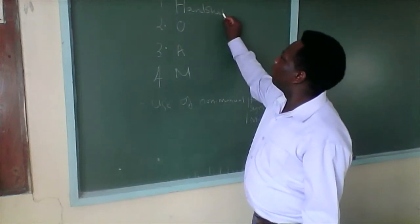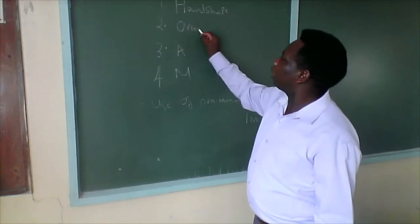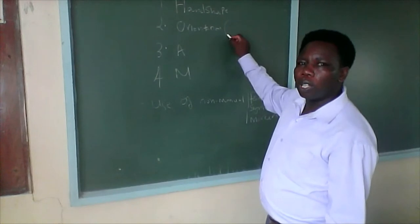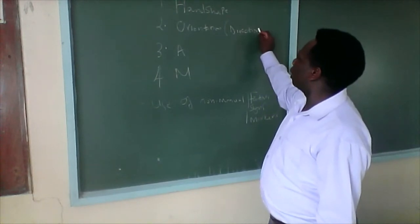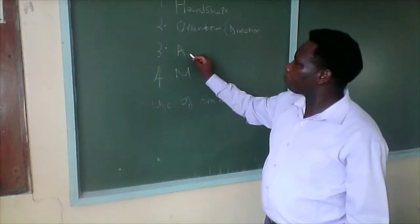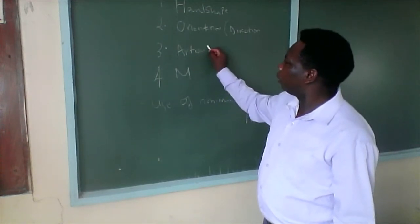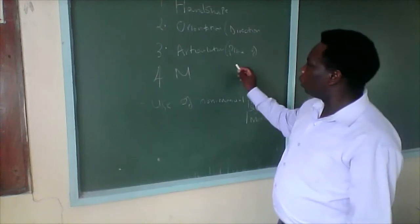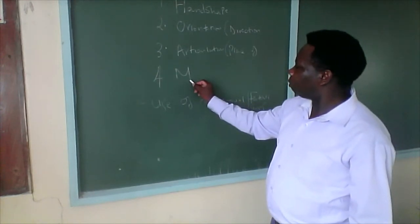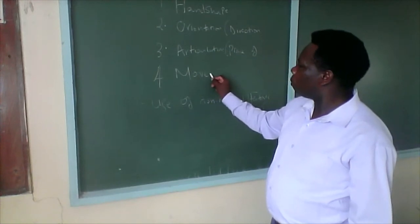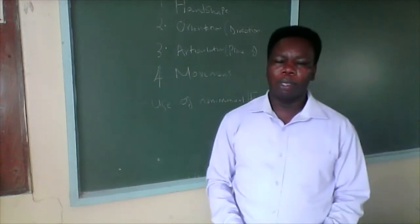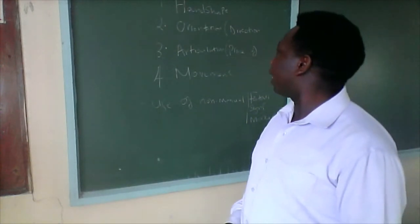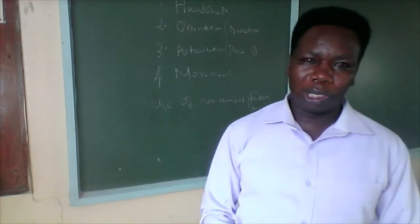When we talk of HOAN, I challenge people to keep remembering it. H stands for Handshape. O is Orientation, which is also called direction. A is Articulation, which is place of articulation. And finally, N stands for Movement. Those are the four: Handshape, Orientation or Direction, Place of Articulation, and Movement.